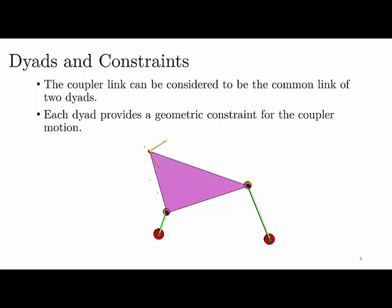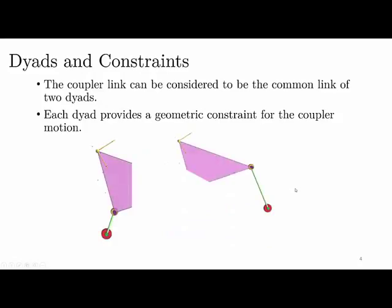So what are the dyads and what are the constraints? If you look at a planar four-bar linkage where every joint is a revolute joint or a hinge, you have a coupler — the link right in the middle shown in pink here. You can take this mechanism apart to get two dyads, and each dyad provides a geometric constraint for the coupler motion. These constraints are essentially circular constraints; a moving pivot traces a circular path.